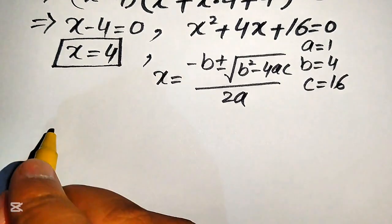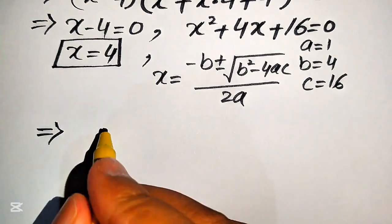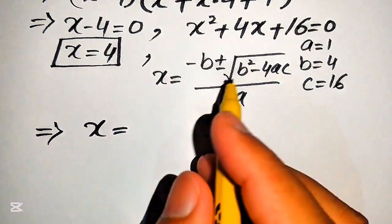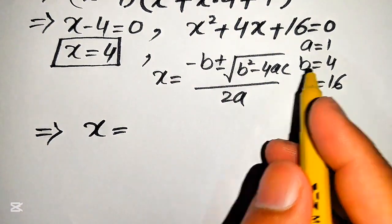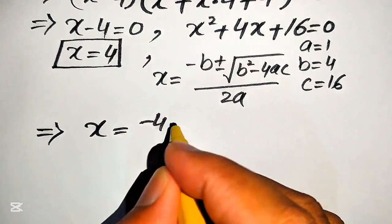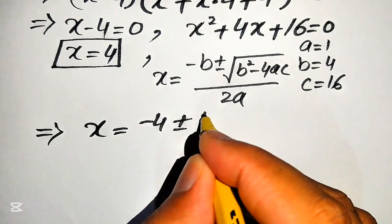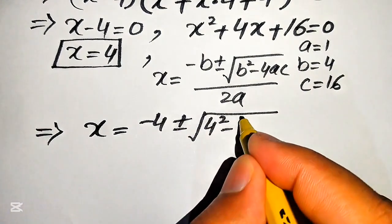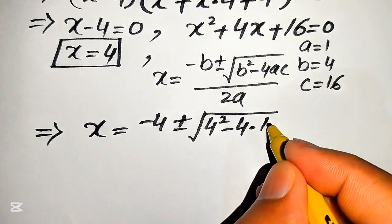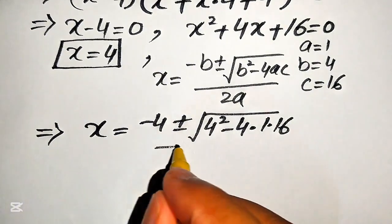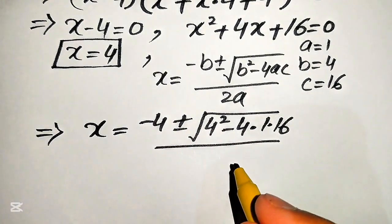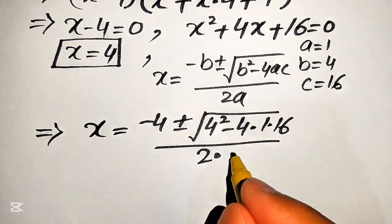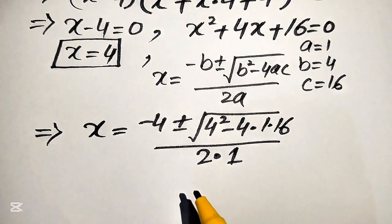Now we put the values of a, b, and c into the formula. With b equals 4, it becomes minus 4 plus minus square root of 4 squared minus 4 times 1 times 16, divided by 2 times 1, which equals 2.